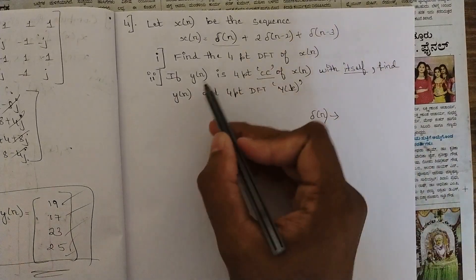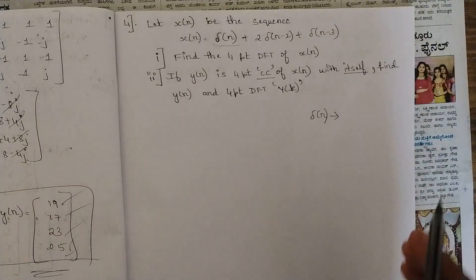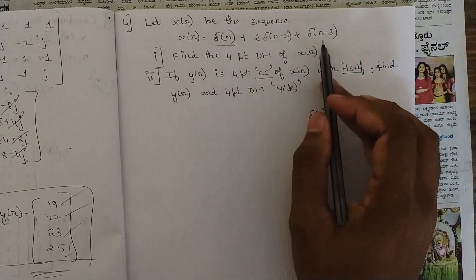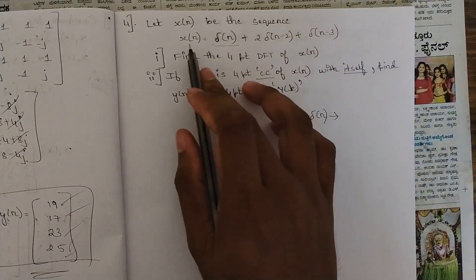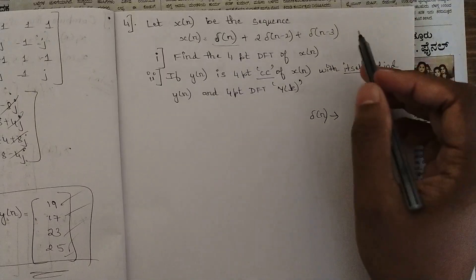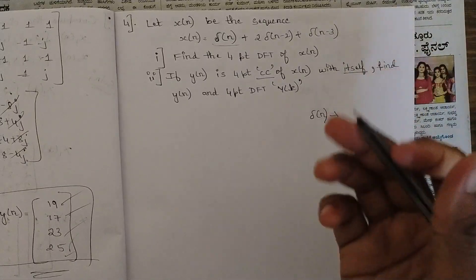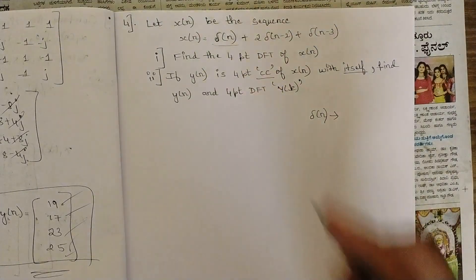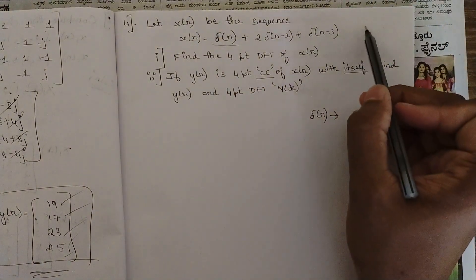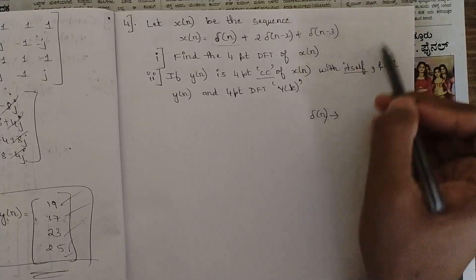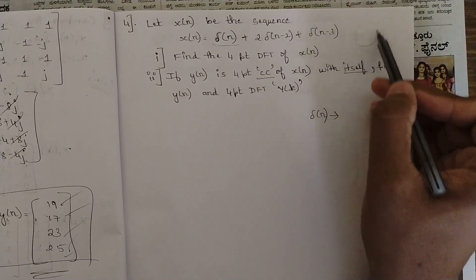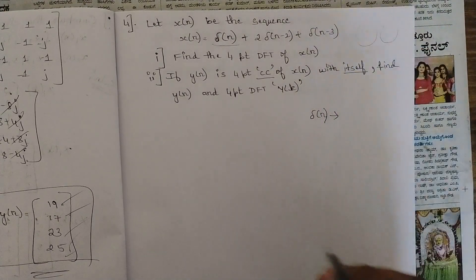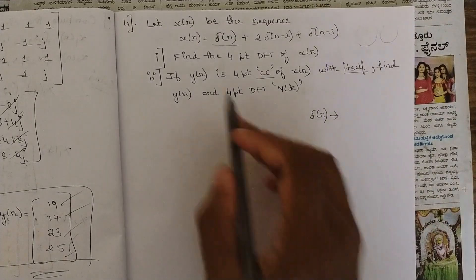The statement says 4-point circular convolution of x(n) with itself. In circular convolution we take the DFT of a sequence and multiply it point-to-point with another sequence's DFT. But here, whatever answer we get for this sequence, we multiply it with itself — point-to-point multiplication — and then take the IDFT to find the circular convolution.